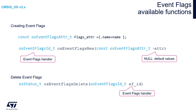To create an event flags object, use the dedicated function osEventFlagsNew, which requires one argument: a pointer to the structure with the attributes. You can specify just the name, or pass NULL to use default values. The function returns a handler to the event flags object for use in other functions. To delete event flags, use osEventFlagsDelete, which takes the handler and returns an osStatus_t value — zero means success, and a negative value indicates an error occurred during the process.